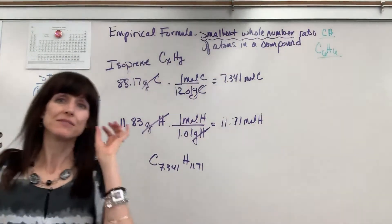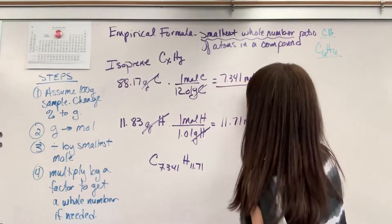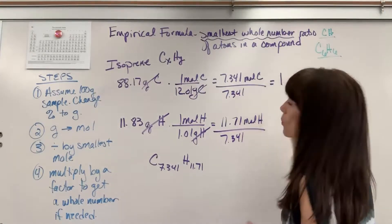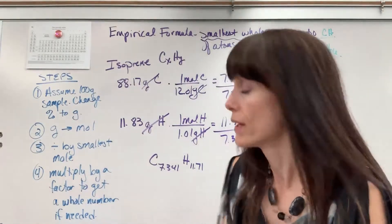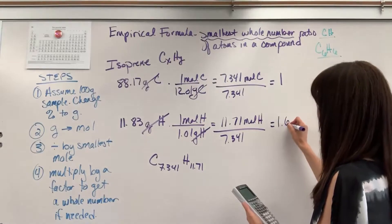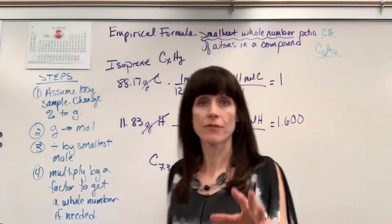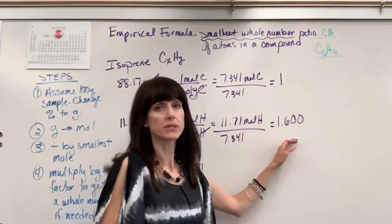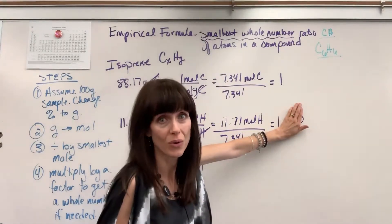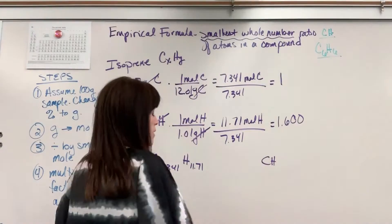Step three. Divide by the smallest mole. Our smallest mole is 7.341. So I divide 7.341, 7.341. Well of course this is going to be one. One mole of the carbon. When I divide 11.71 divided by 7.341 this is what we get. 1.600. 1.6. It's still not a whole number. Now often when you do empirical formula you will get whole numbers here. Boom. You're done. Pretend with me. If this had been a nice even number one, whole number one, then I just would have written CH like that and been done. But I can't.